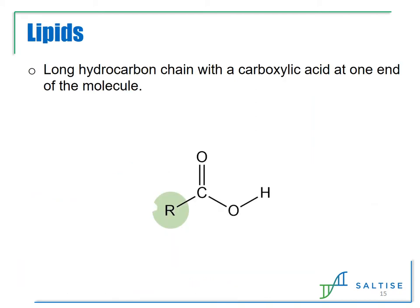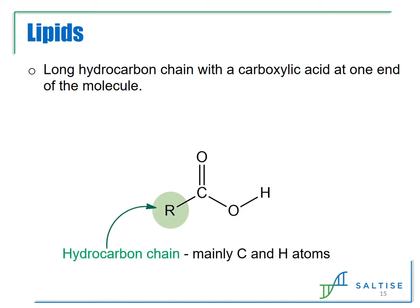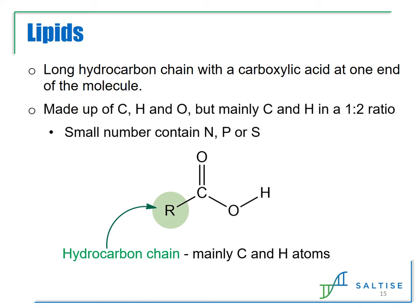The third major category is lipids. Common lipids you would be familiar with are fats, oils, and waxes. Lipids contain long hydrocarbon chains with a carboxylic acid functional group at one end of the molecule. The hydrocarbon chain is mainly made up of carbon and hydrogen atoms and can be anywhere between 4 and 24 carbon atoms long. Although lipids are made up of carbon, hydrogen, and oxygen, they are mainly made up of carbon and hydrogen atoms in a 1 to 2 ratio. There are a small number of lipids that also contain nitrogen, phosphorus, or sulfur. Various types of lipids include fatty acids, fats, cholesterol, phospholipids, and glycolipids.